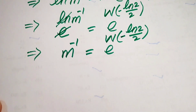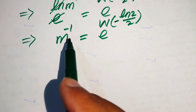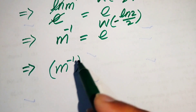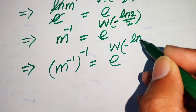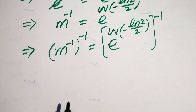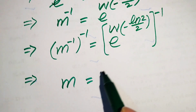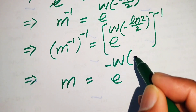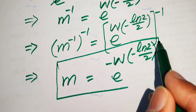To find m, we eliminate the minus 1 power by taking the minus 1 power on both sides. On the left, minus times minus gives m. On the right, multiplying the exponent by minus 1 gives: m equals e to the power of minus W of minus log(2) divided by 2. This is the final answer.